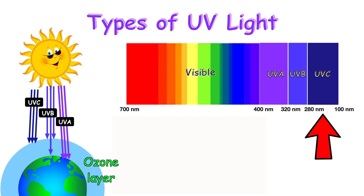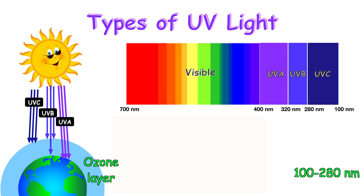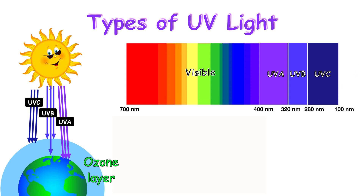UVC has the shortest wavelength, between 100 and 280 nanometers. It is very energetic and dangerous to all forms of life, even with short exposures. Luckily for us, UVC is filtered out by the ozone layer and never really reaches the Earth, but it can be created artificially to kill bacteria.